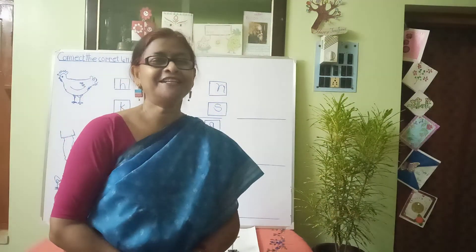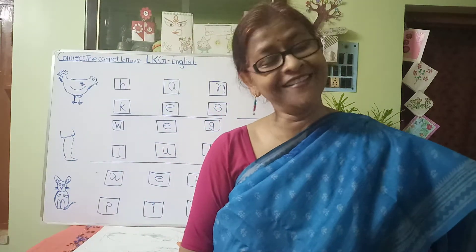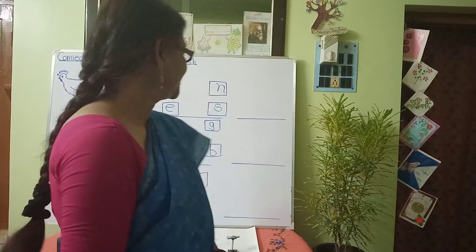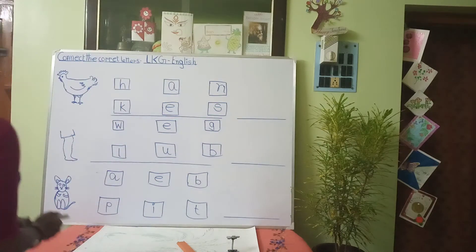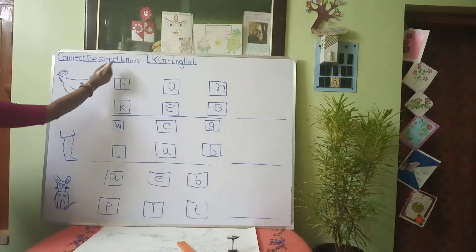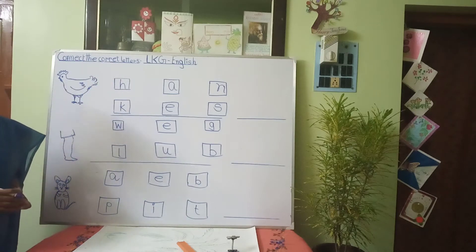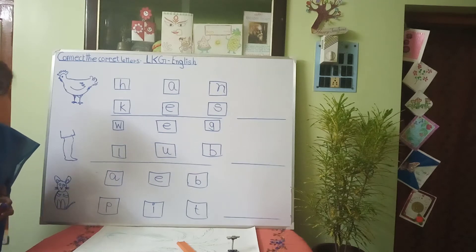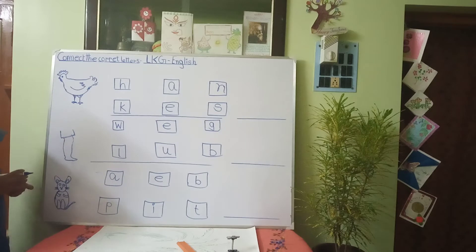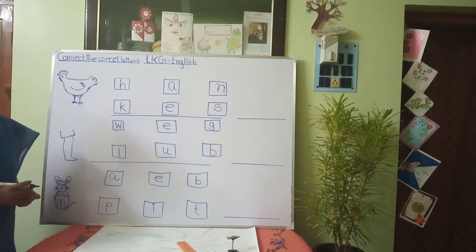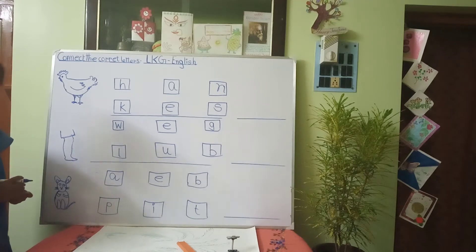Good morning, children. Today, we are going to play another game. Look at the board. The topic is 'Connect the Correct Letters.' Connect the correct letters to make a correct word. At first, we will connect the correct letters and then write down the word. Understood?